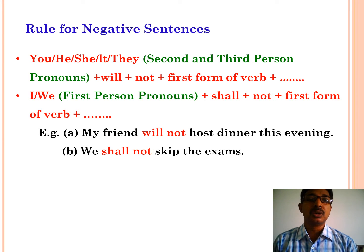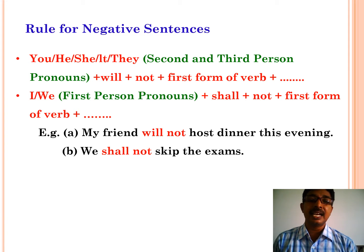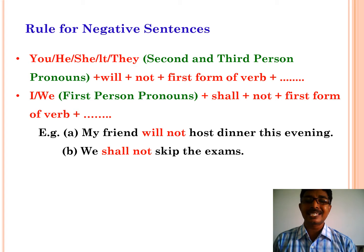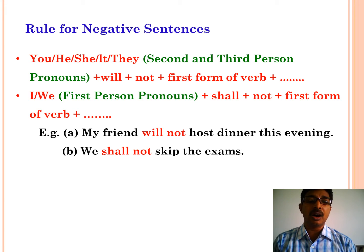Sometimes we frame negative sentences in simple future. The structure for second and third person pronouns is: you/he/she/it/they — plus will — plus not — plus first form of the verb — plus object. For first person pronouns I and we, the structure is: I/we — plus shall — plus not — plus first form of the verb — plus object. For example: my friend will not host dinner this evening. We shall not skip the exams.